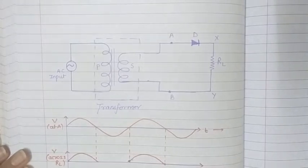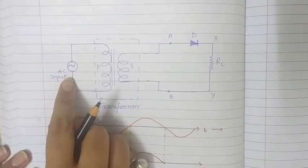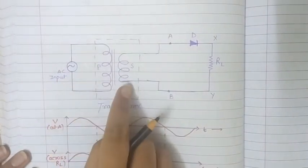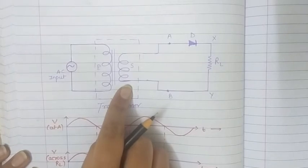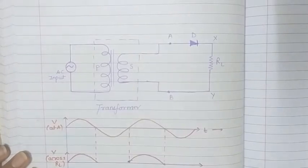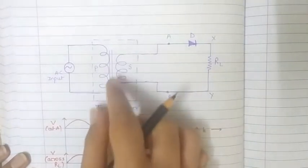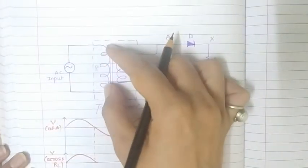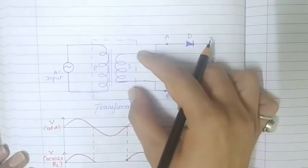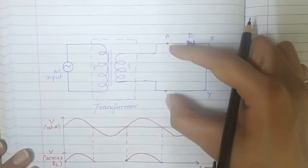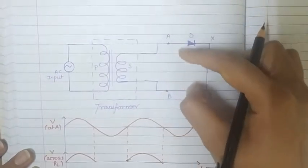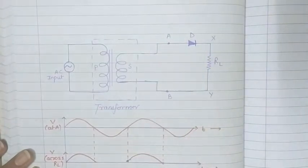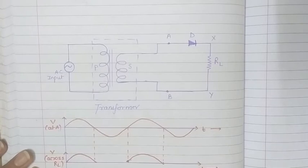When this AC is supplied to the primary coil, the secondary coil of the transformer supplies the desired alternating voltage across A and B. We can see from points A and B whether this diode is forward biased or reverse biased.